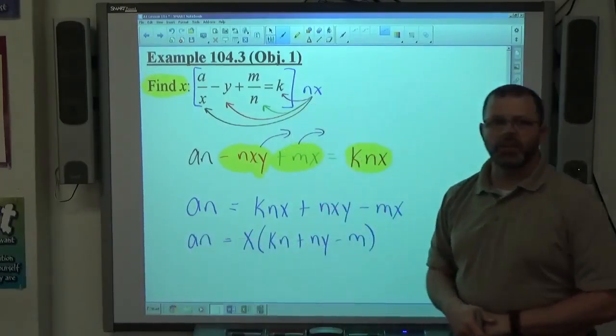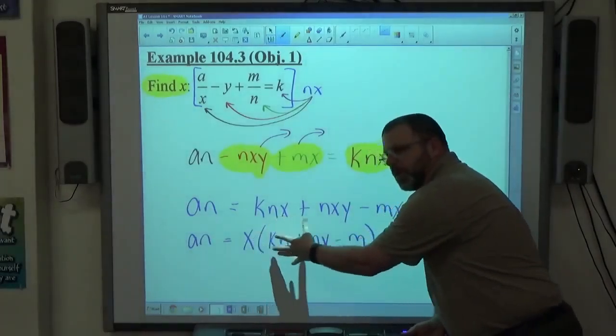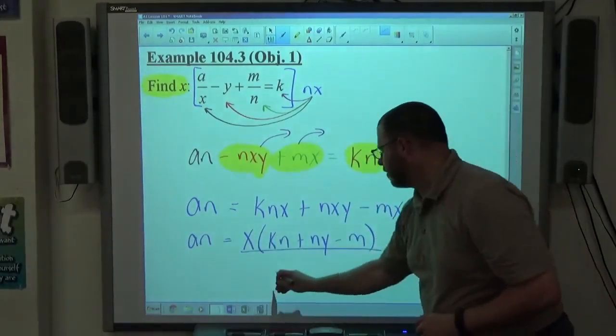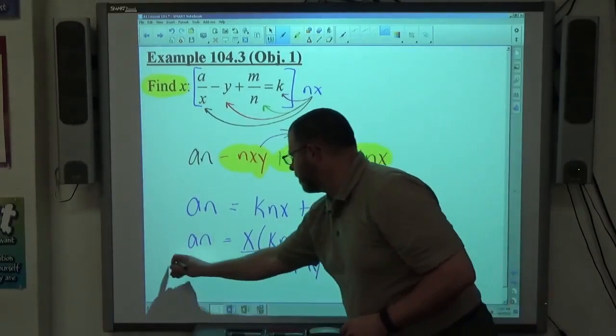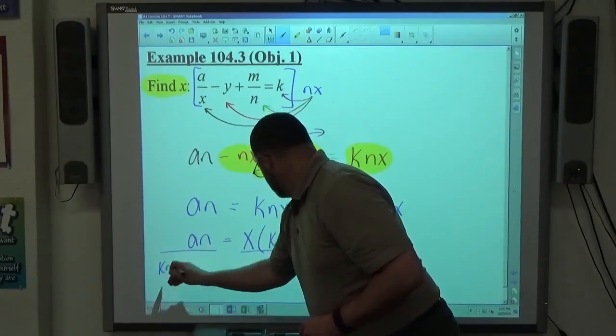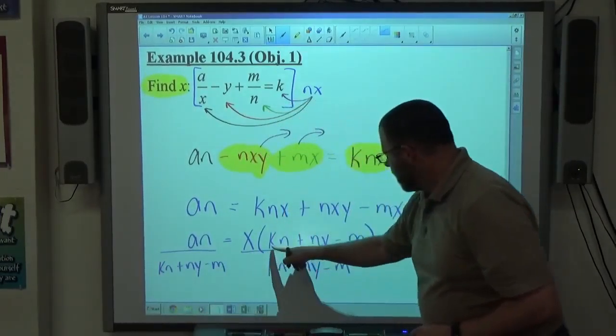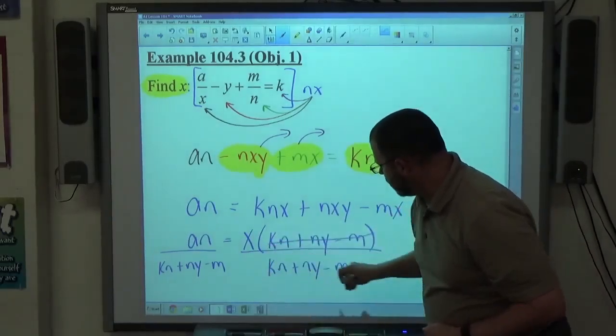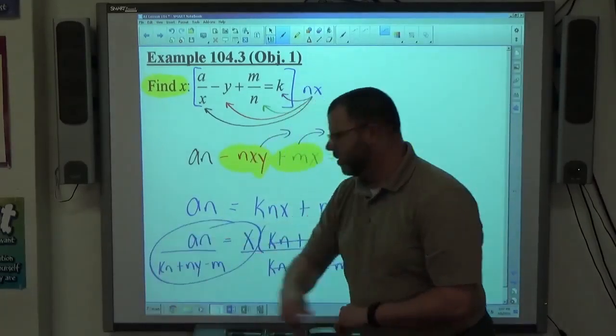When I take that common factor out, nothing happens to the left-hand side, but break it down anyway. And then again, X is being multiplied by all this stuff. I want all that stuff to disappear, so I simply divide by all that stuff. So divide by KN plus NY minus M. Do the same to the other side. KN plus NY minus M over KN plus NY minus M all cancels, leaving all by itself X equals the answer when we're on the other side.